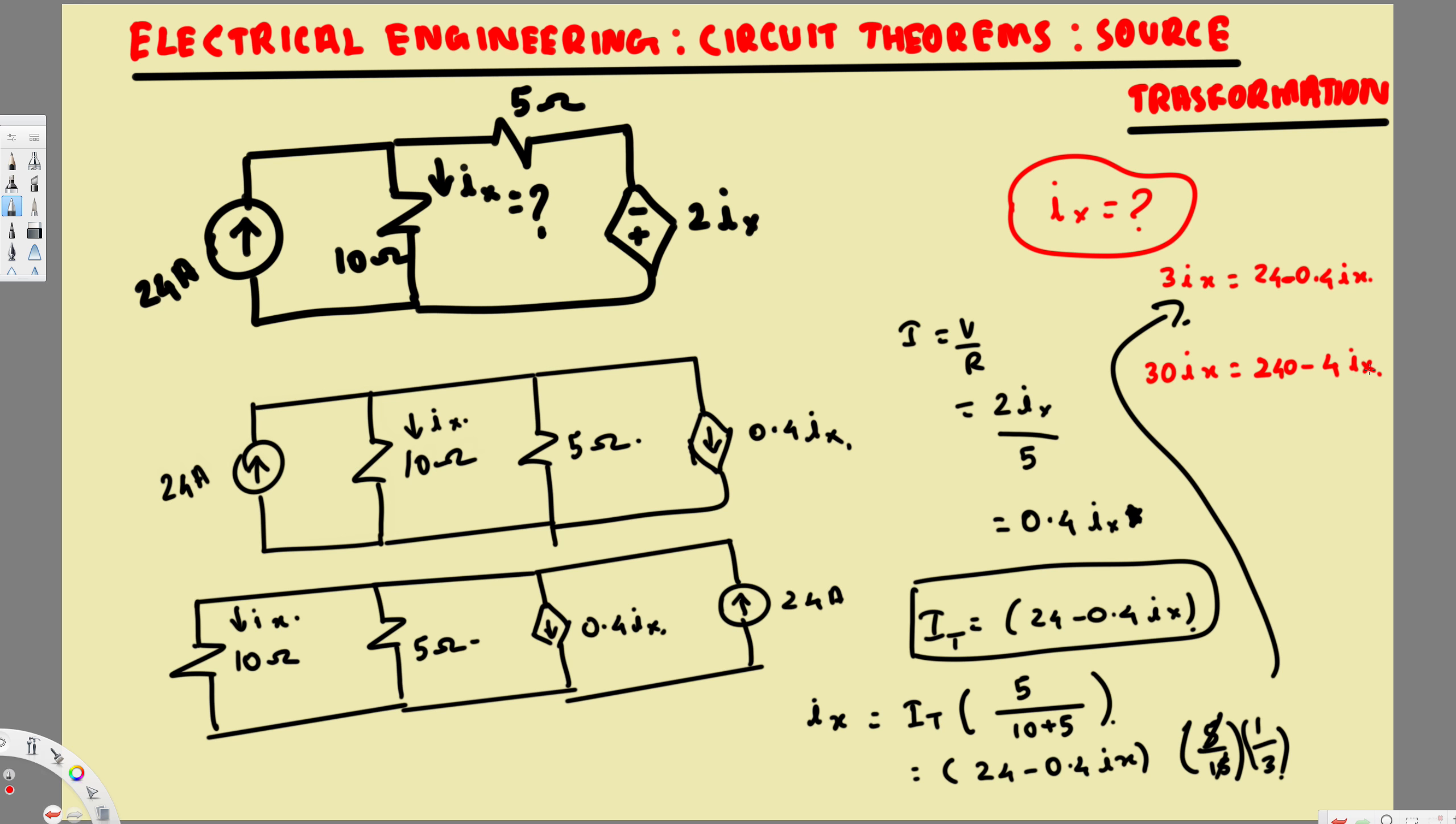Now if I bring this 4Ix to this side, that's going to be 34Ix equals 240. Therefore Ix equals 240 divided by 34, and if you calculate this using a calculator, you should get 7.06 ampere.